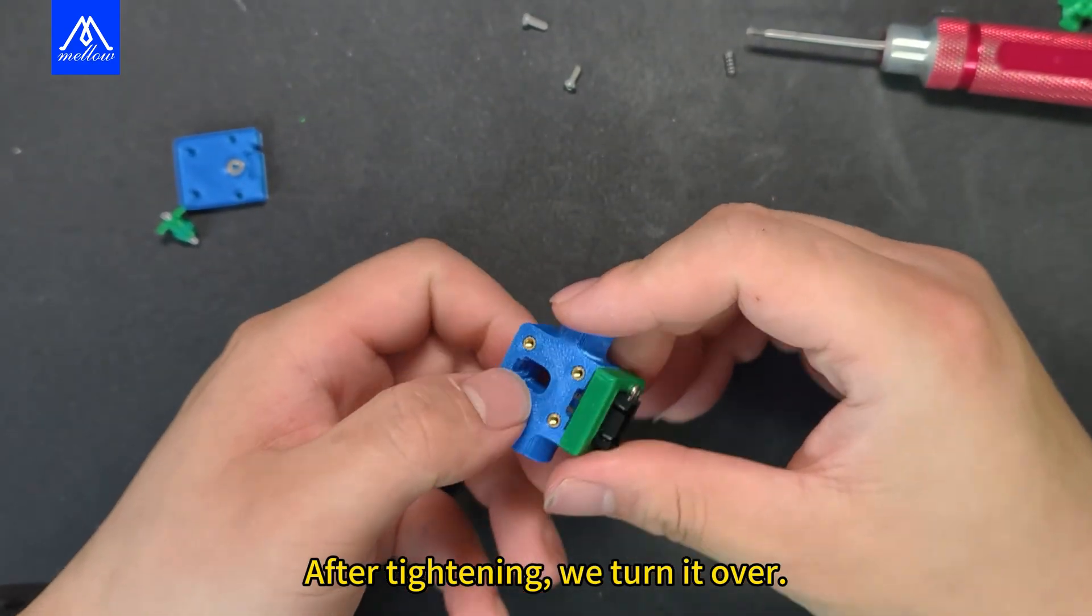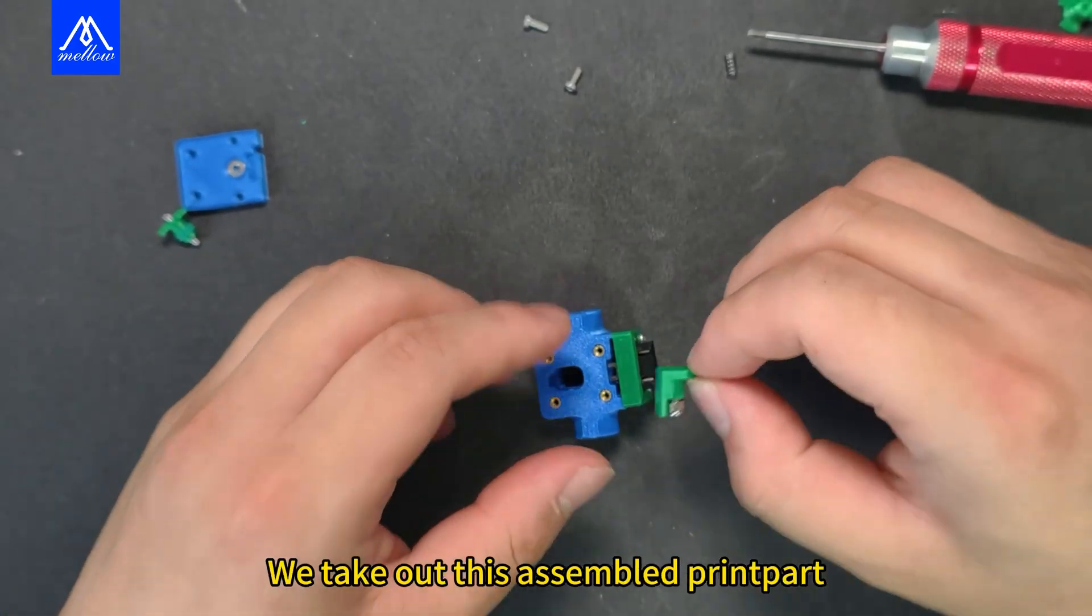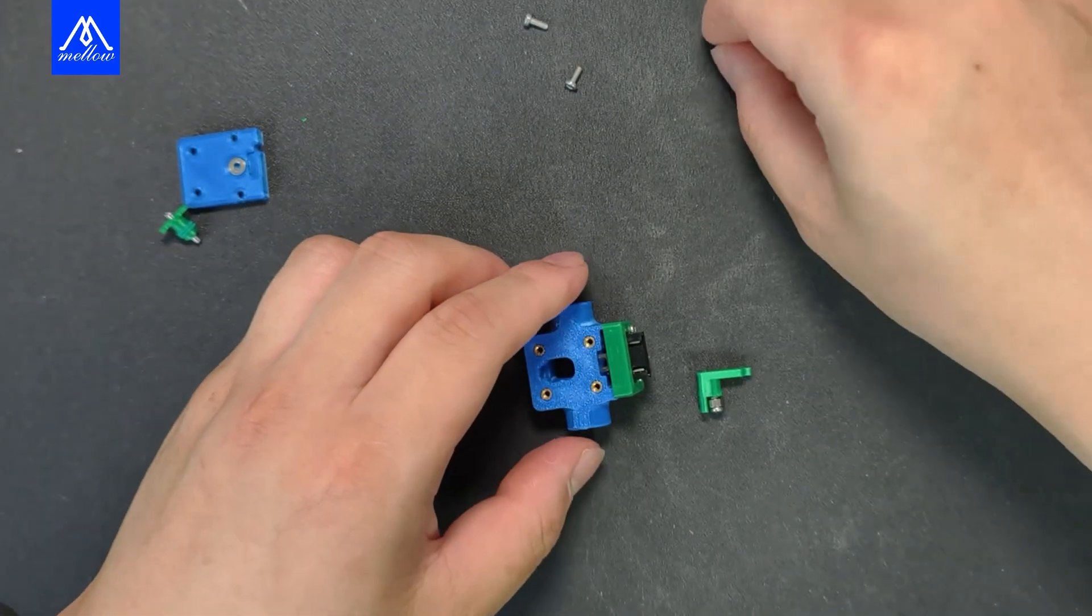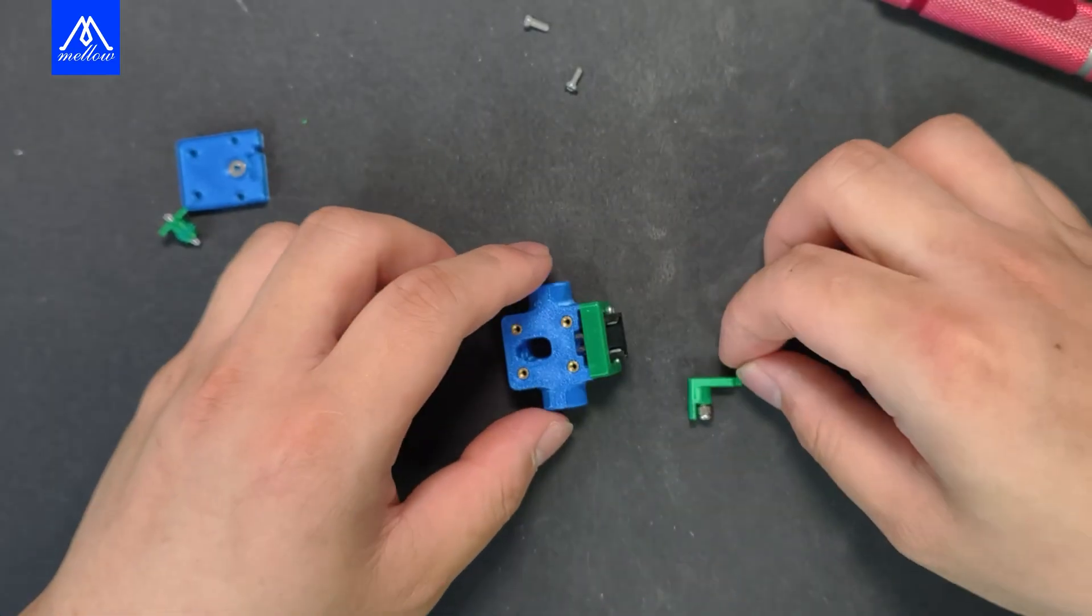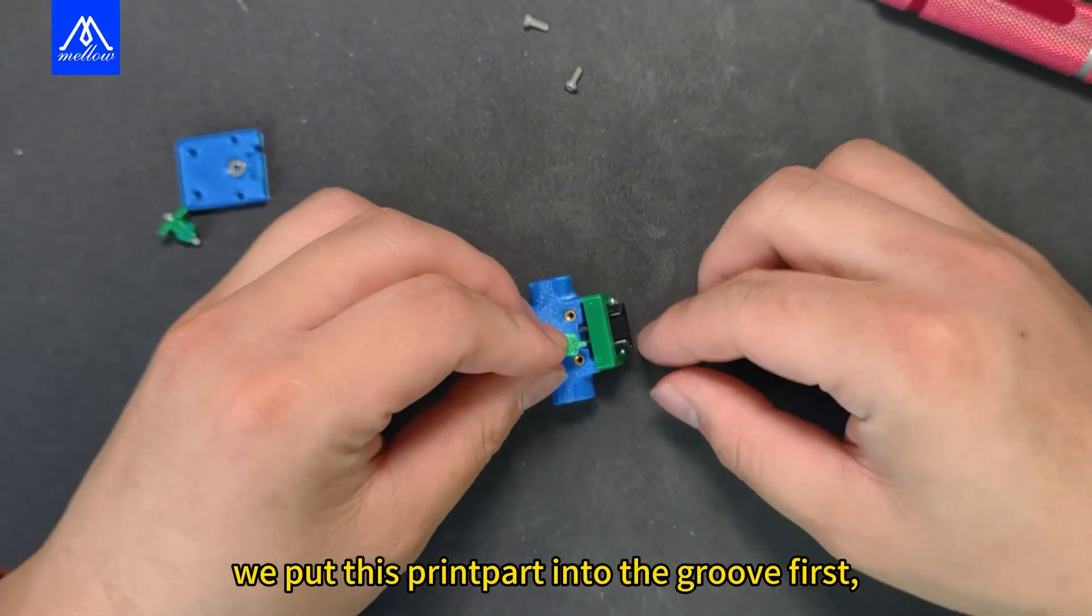After tightening, we turn it over. There is a groove here. We take out this assembled print part. Then take out the spring. We put this print part into the groove first.